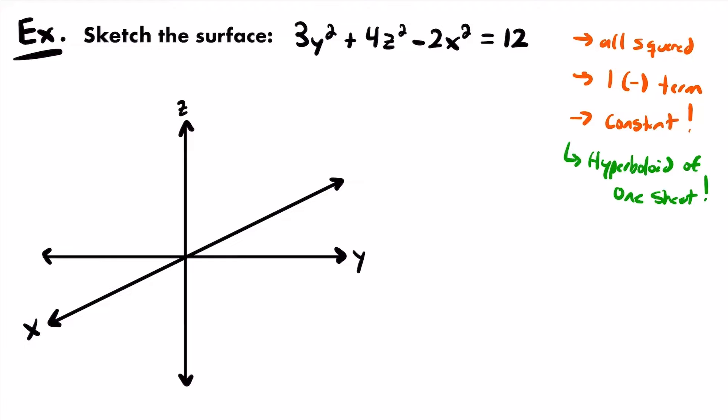What axis will this hyperboloid be directed along? It's always based on the odd man out. Looking at our variable terms, 2 are positive and 1 is negative — the negative 1 is the odd one out, which is the x term. This means the hyperboloid of 1 sheet will be directed along the x-axis.